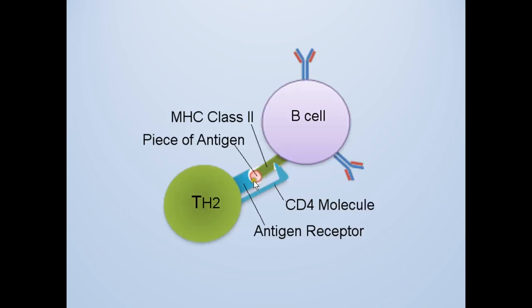The helper T will bind to the B-cell if it recognizes both the MHC and piece of antigen. As you see here, the T-cell uses its CD4 marker to recognize the MHC on the B-cell.